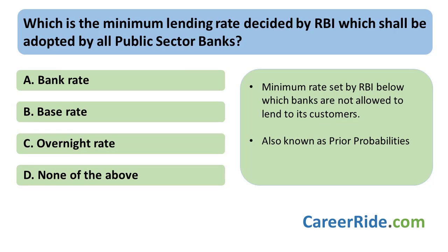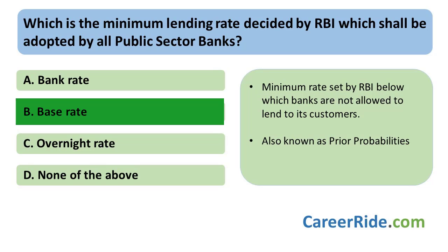The next question is: which is the minimum lending rate decided by RBI which shall be adopted by all public sector banks? Base rate is the minimum rate set by the Reserve Bank of India below which the banks are not allowed to lend any money to its customers. Base rate is decided in order to enhance transparency in the credit market and the money market, to ensure that banks pass on the lower cost of funds to their customers.